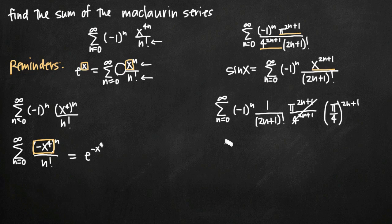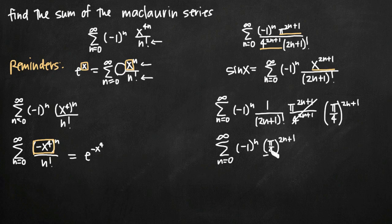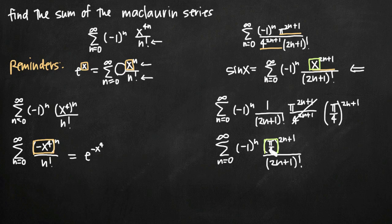Putting this back into the numerator, we get the sum from n equals zero to infinity of negative one to the n times pi over 4 all raised to the 2n plus 1, divided by 2n plus 1 factorial. Comparing this to our well-known series, we have the negative one to the n, the 2n plus 1 factorial in the denominator, and the numerator matches exactly — except where the well-known series had x, we now have pi over 4. So we replace x with pi over 4.